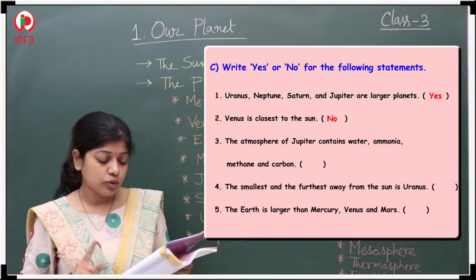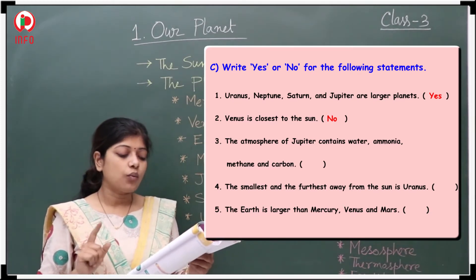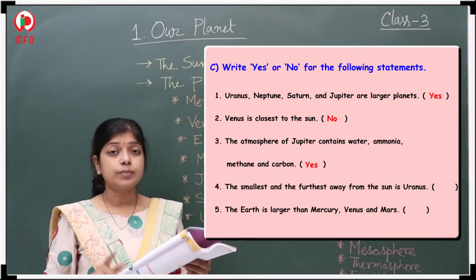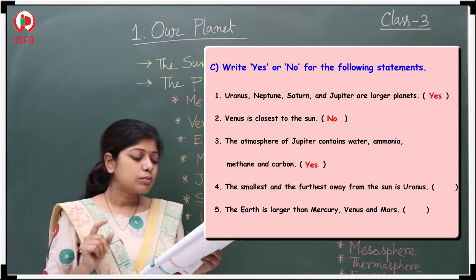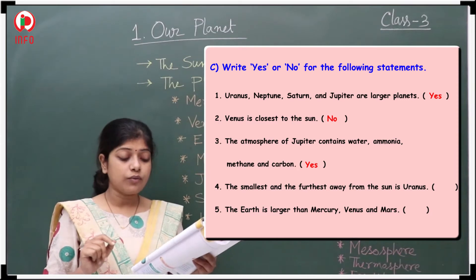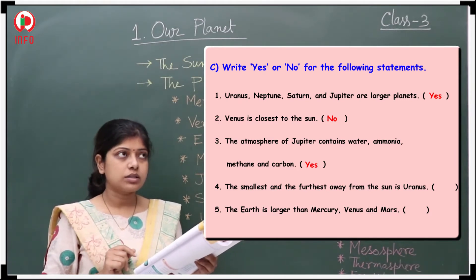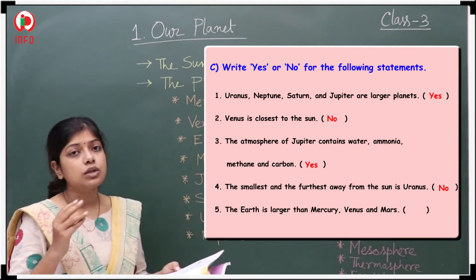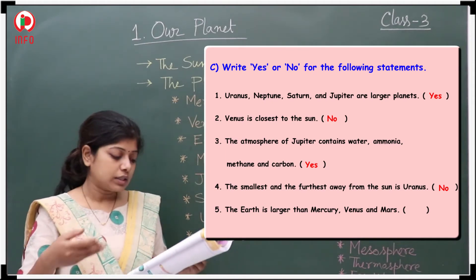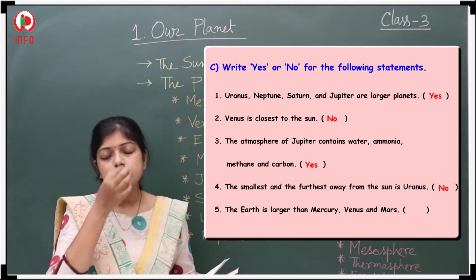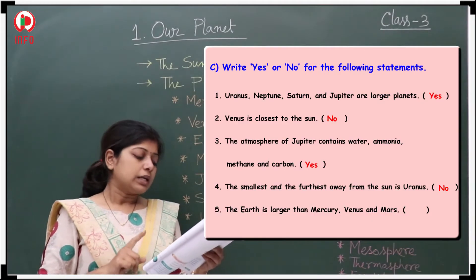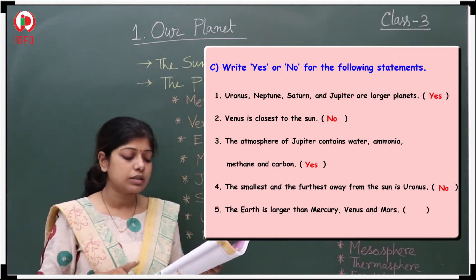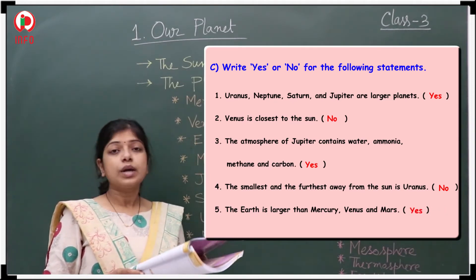Third: The atmosphere of Jupiter contains water, ammonia, methane, and carbon — Yes, that is correct. Fourth: The smallest and furthest away from the sun is Uranus — No, that is not correct, as Uranus is neither the smallest nor the furthest. Fifth: The Earth is larger than Mercury, Venus, and Mars — Yes, that is correct.